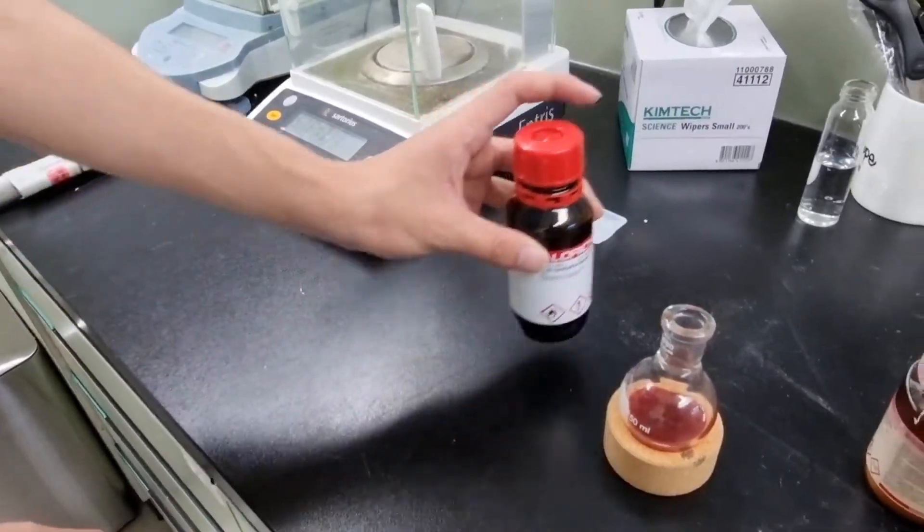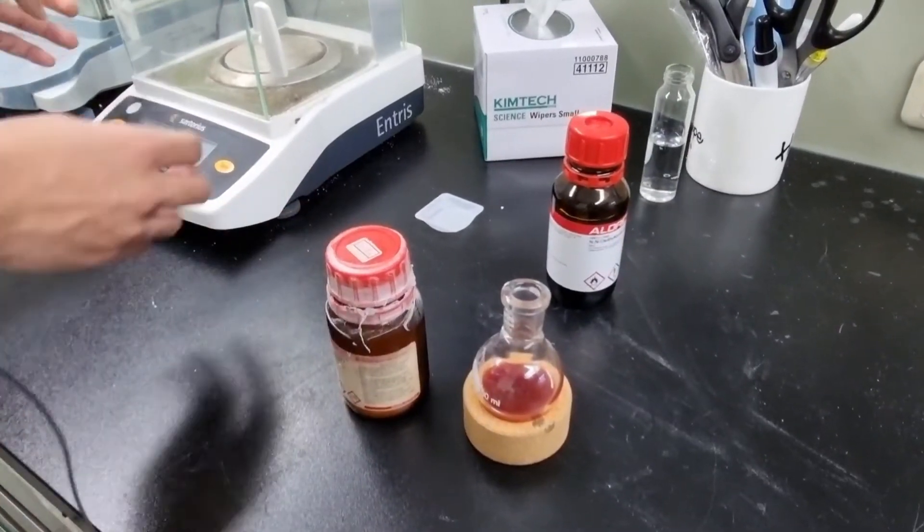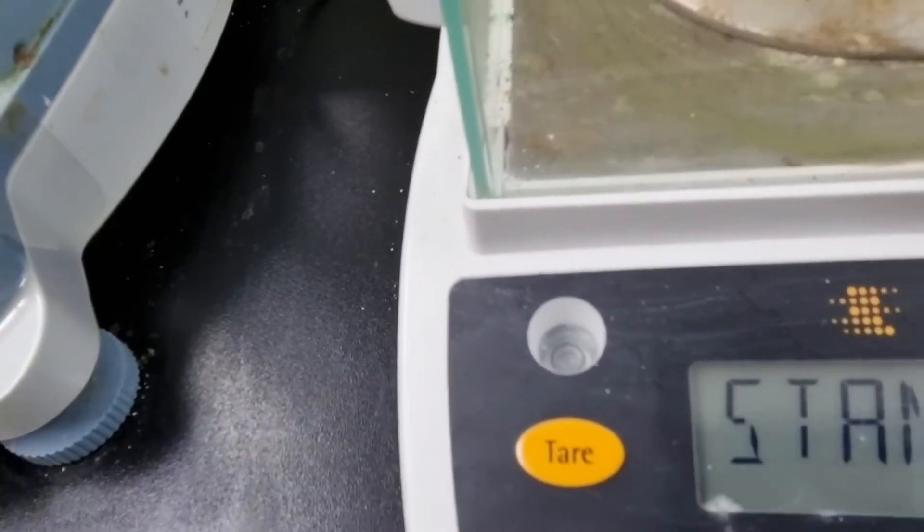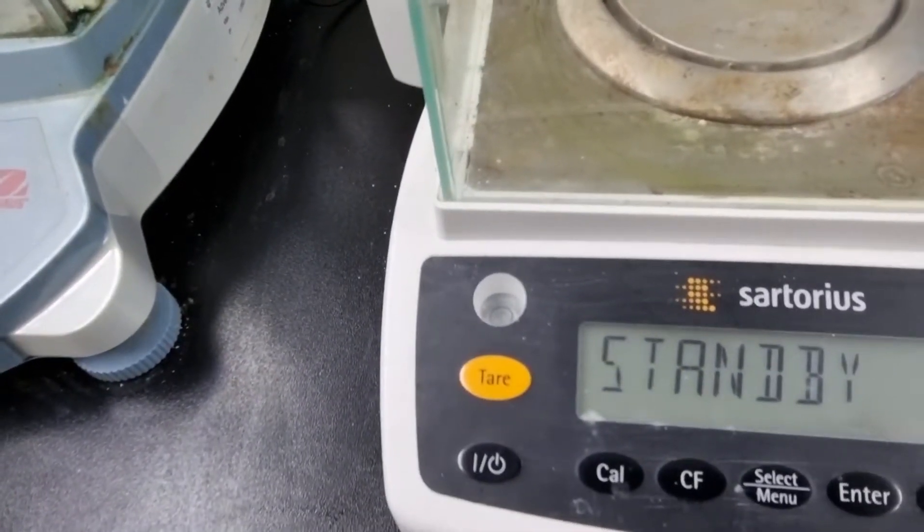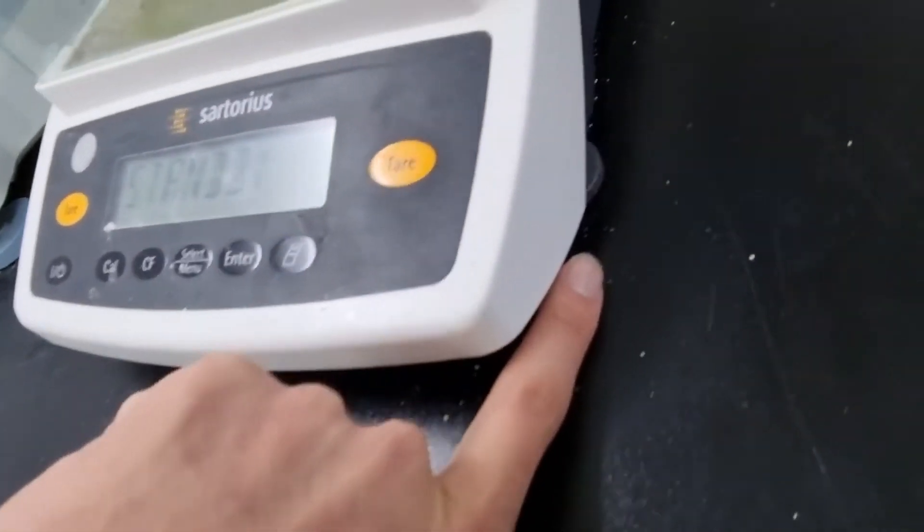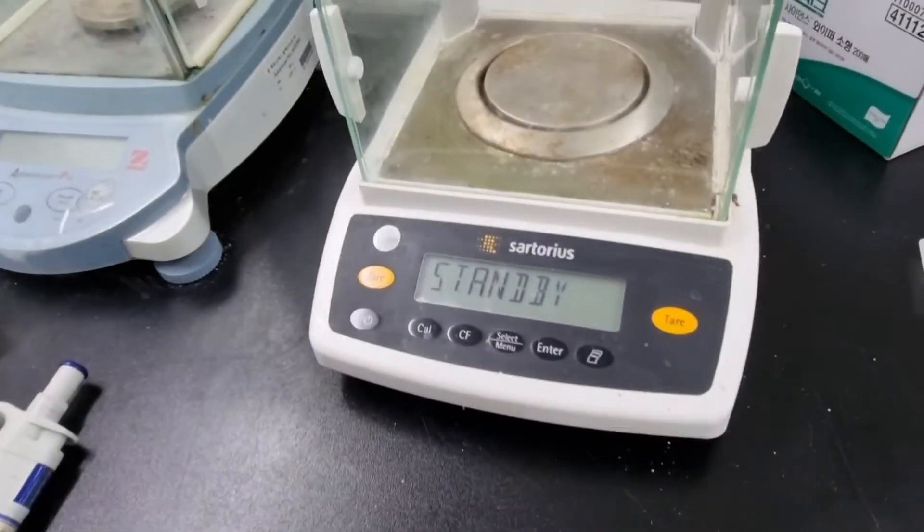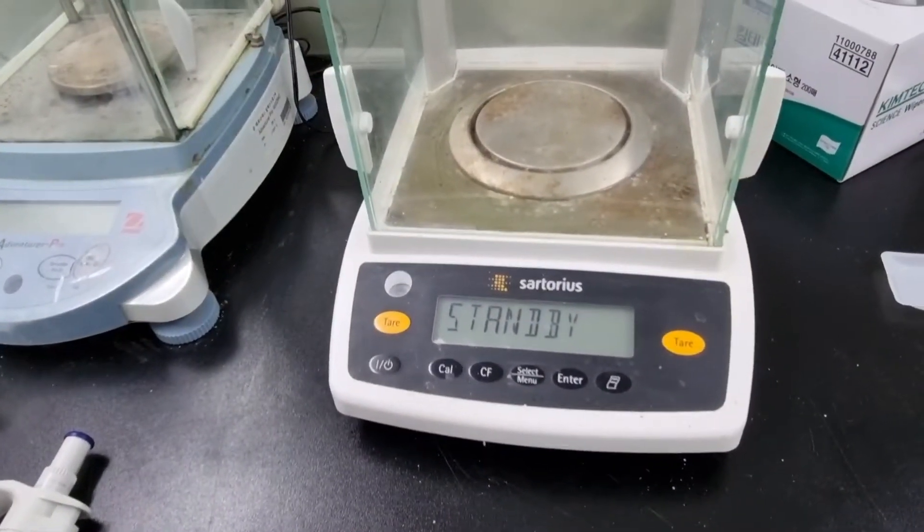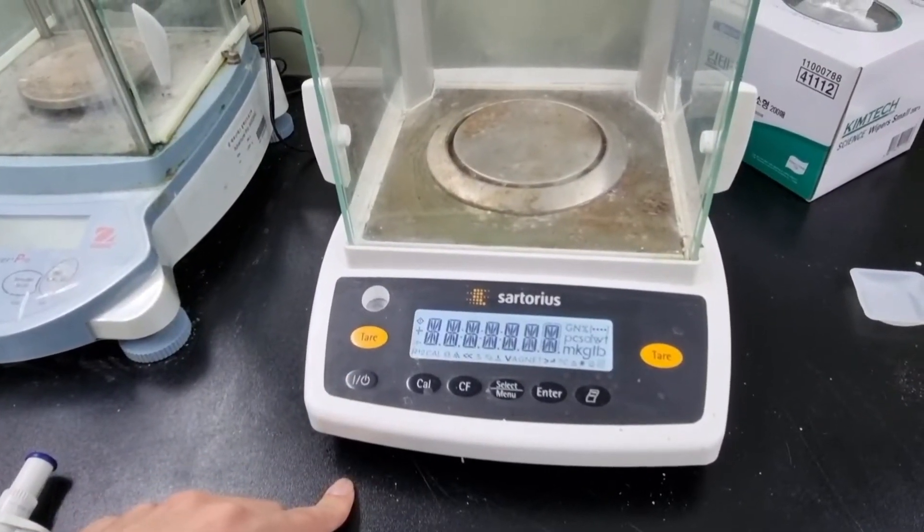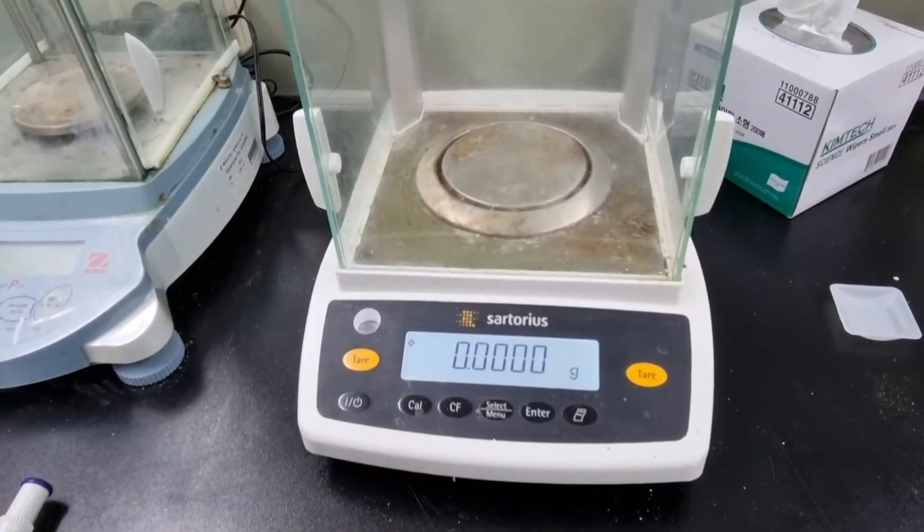So first, in order to weigh the metal salt, you must first set the balance. The round bubble is right at the center of the circle, so you can see that it's set. If it isn't, you can rotate these legs at the bottom. So first you turn on the power, and you wait for the numbers to appear.